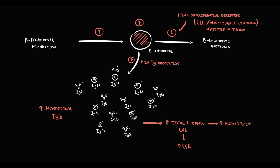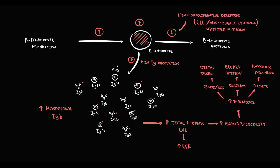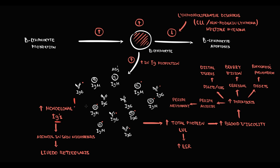Increasing protein level raises blood viscosity, and higher viscosity increases the risk of thrombosis. If thrombosis occurs in the digits it causes Raynaud's phenomenon; in cerebral circulation it causes blurry vision; in the digits or toes it causes distal ulcers due to decreased nutrient delivery. Thrombosis in peripheral arteries can cause peripheral neuropathy, and accumulation of monoclonal immunoglobulins in skin microvessels can cause livedo reticularis. This condition, with only monoclonal IgG and IgM, is called cryoglobulinemia type 1, and its major pathological feature is increased blood viscosity.